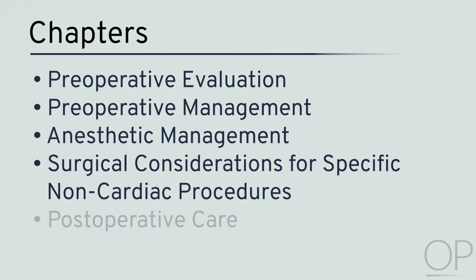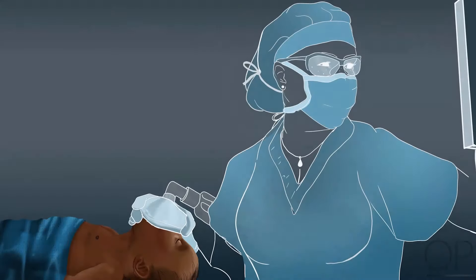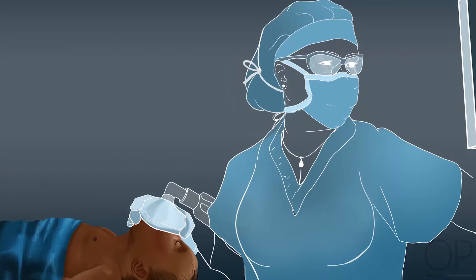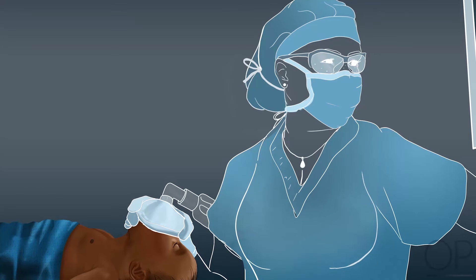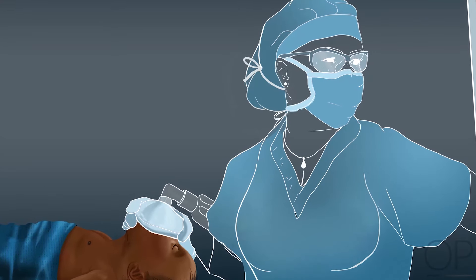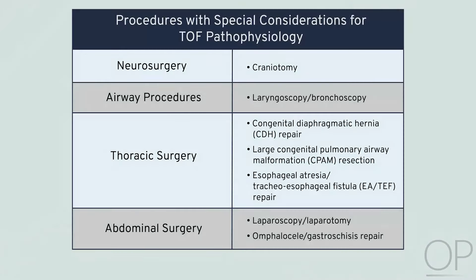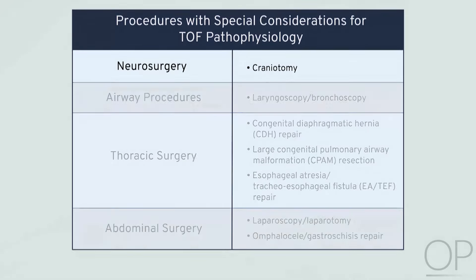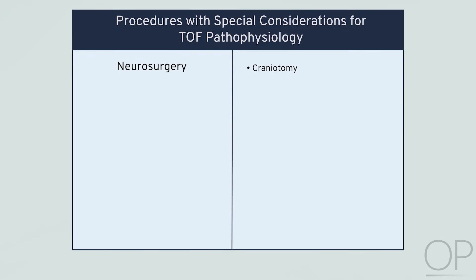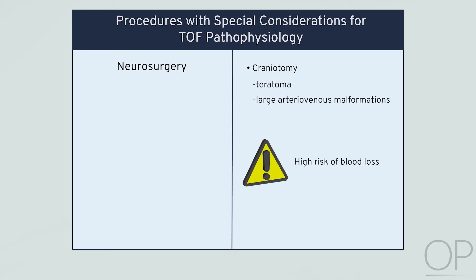Surgical Considerations for Specific Non-Cardiac Procedures. Non-cardiac surgery in patients with unrepaired Tetralogy of Fallot is usually only performed in urgent cases or situations where additional congenital anomalies have to be addressed before cardiac repair. There are a few indications for urgent craniotomy in a neonate with Tetralogy of Fallot; examples include teratoma or large arteriovenous malformation, typically coiled endovascularly whenever possible. The risk of blood loss is generally high given the proximity of the surgical field to dural venous sinuses, but is also dependent on the surgical approach.